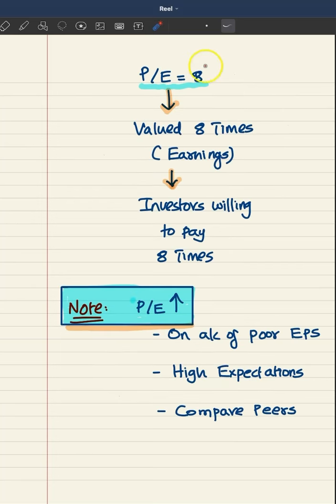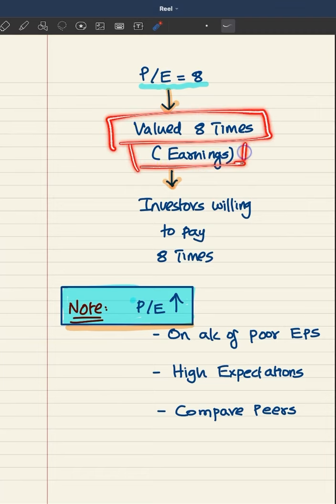This PE ratio of 8 times means this particular share is valued 8 times its earnings in the market.